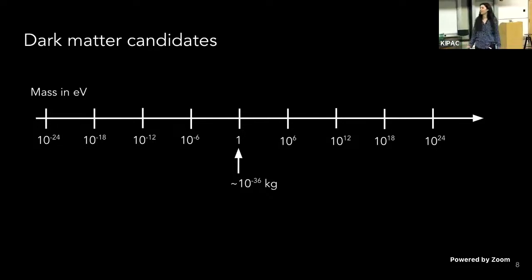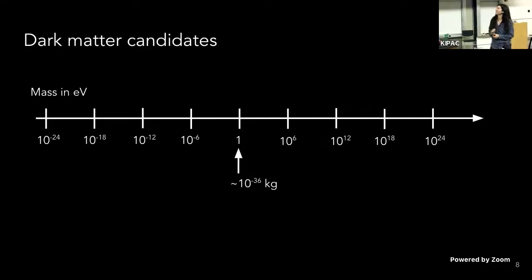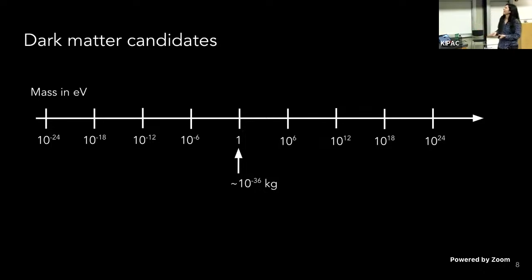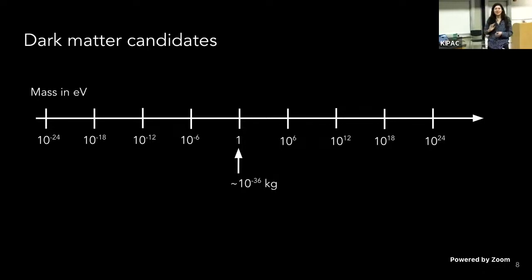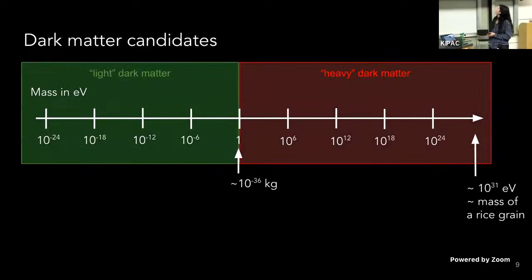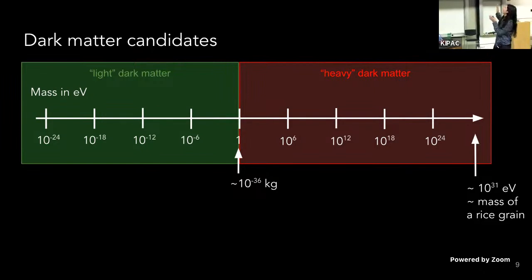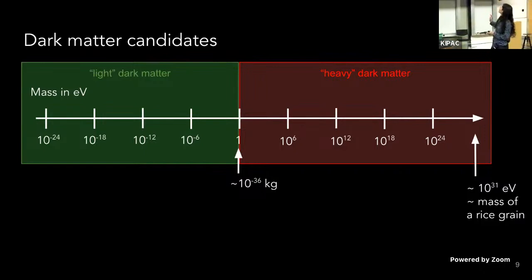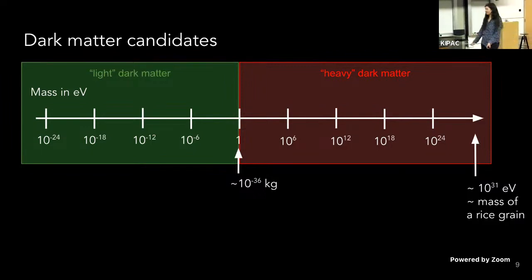There are many dark matter candidates — many things it could be that we don't yet know exist. There's a huge mass range of what each particle or entity of dark matter might be. Here you see an axis of mass in electron volts (eV). One eV is about 10 to the minus 36 kilograms. Something less than 1 eV we consider light dark matter, and something heavier than 1 eV we consider heavy dark matter — though even this heavy dark matter is still much less than macroscopic objects we see in our lives.